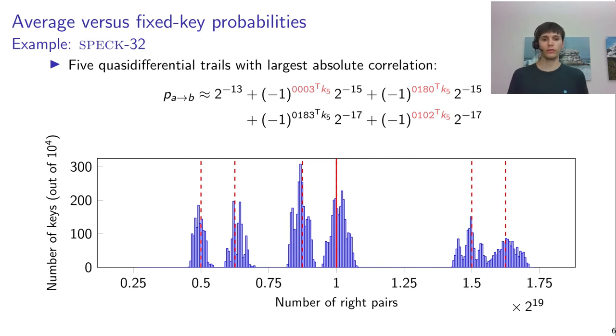And as you can see on the figure, the red lines are the values that this model predicts for the probabilities. This is a pretty good match. And you can increase the accuracy of this by including more quasi-differential trails.